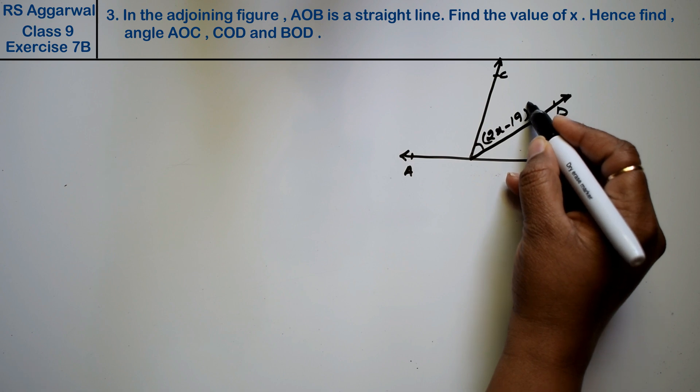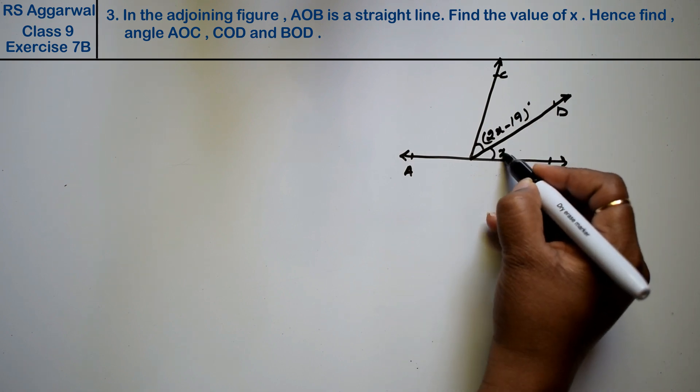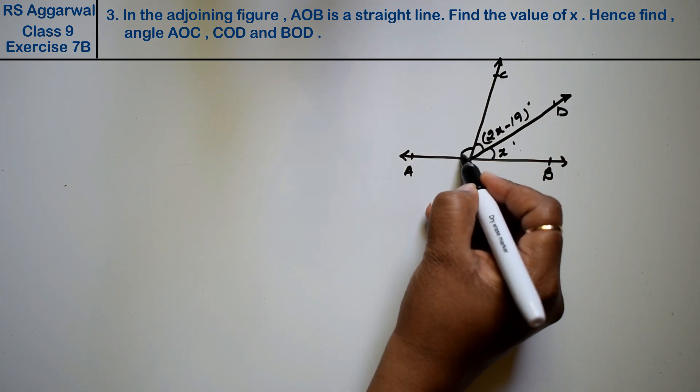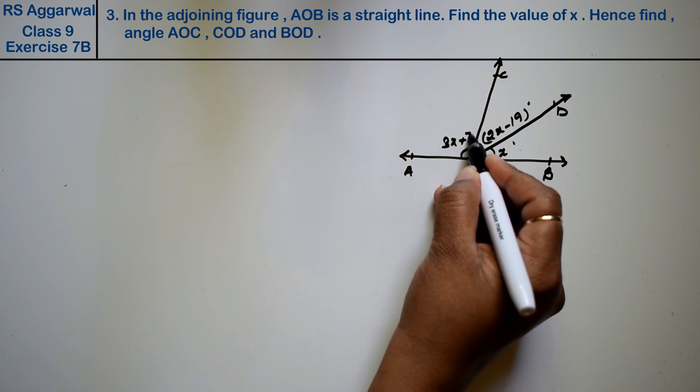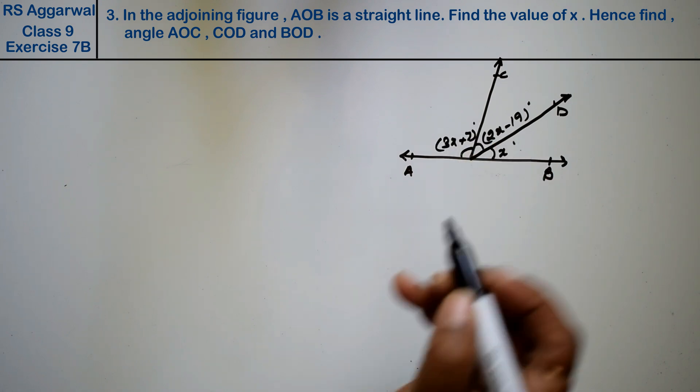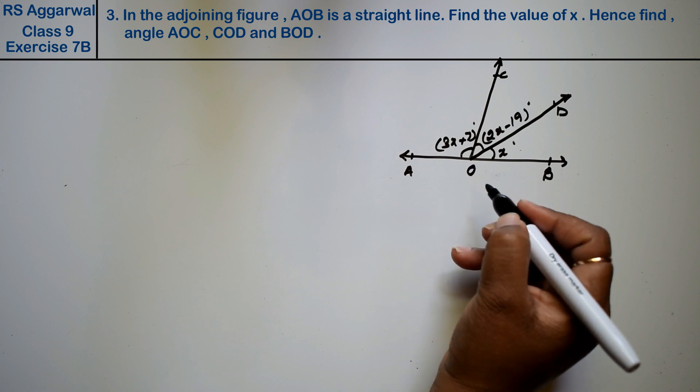Now this is point C and this is point D. This is our 2x minus 19 degrees, this is x degrees, and this is 3x plus 7 degrees right friends. Now this is O.